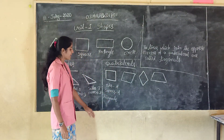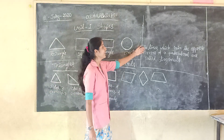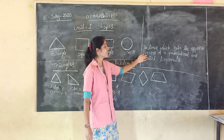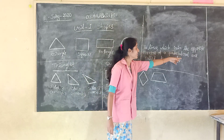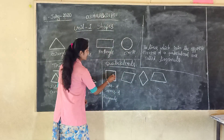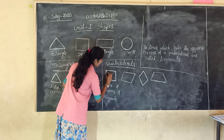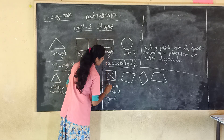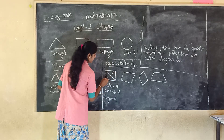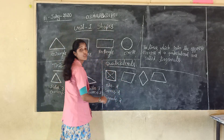See, next up, diagonals. Diagonals means what? The lines which join the opposite corners of our quadrilateral are called diagonals. See, these lines are diagonals. How many diagonals are there? Two diagonals — one, two. So here, diagonals: two.